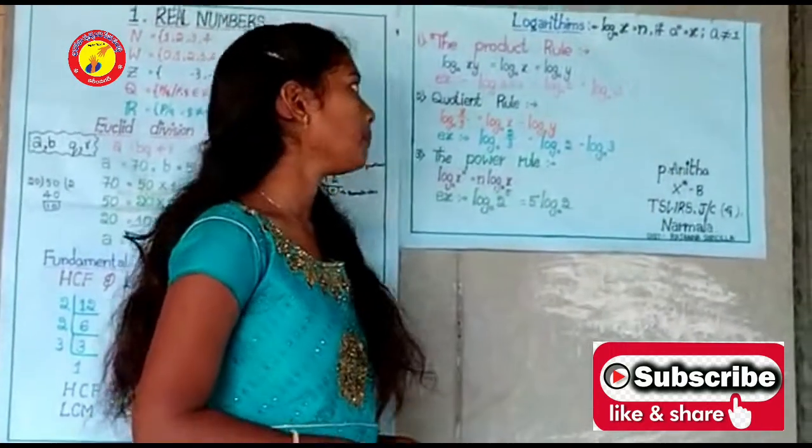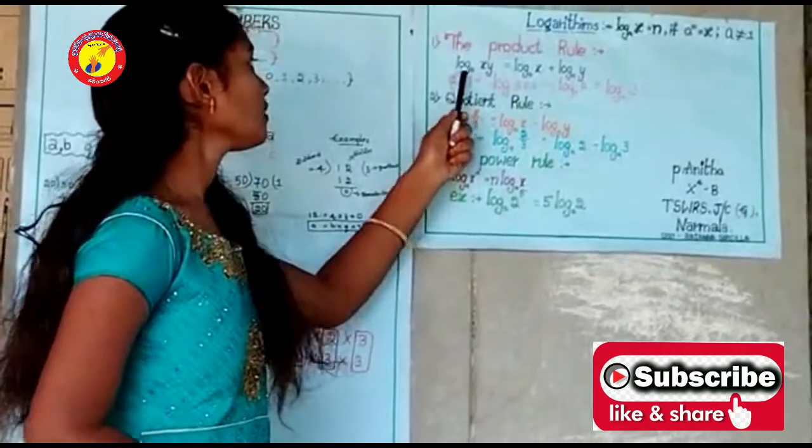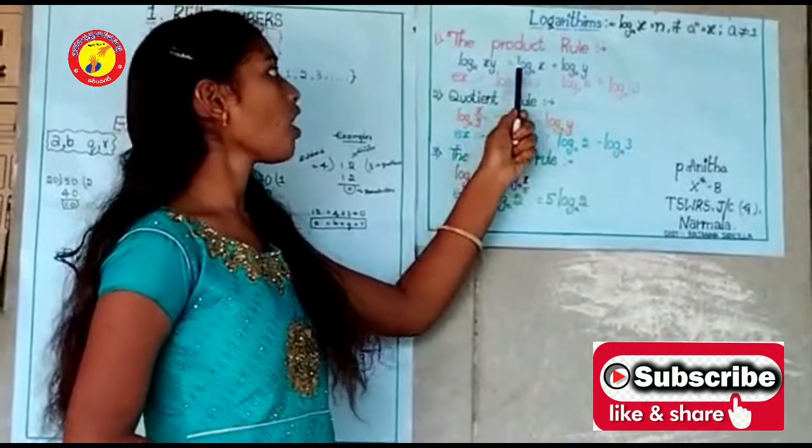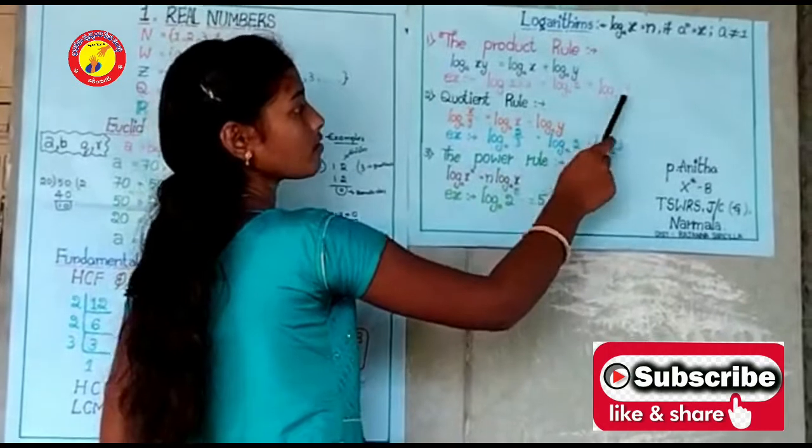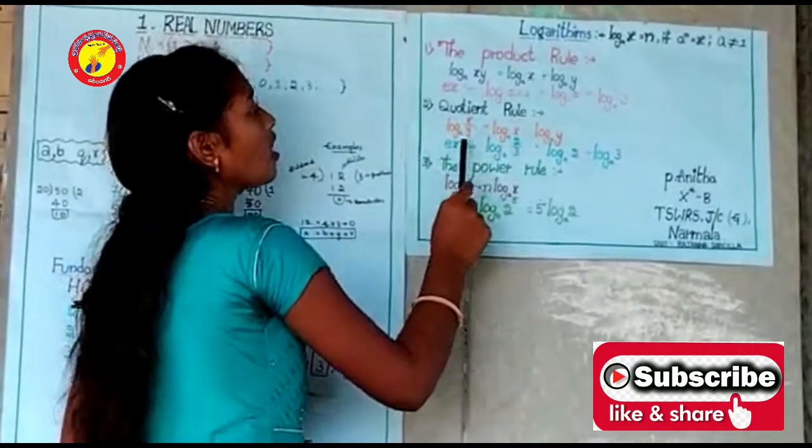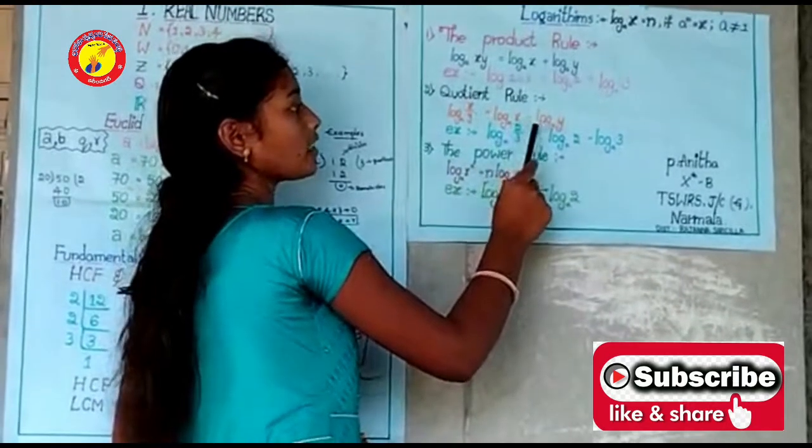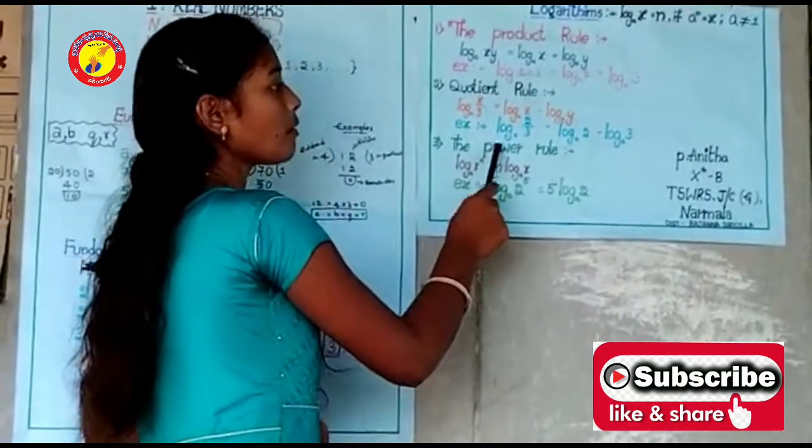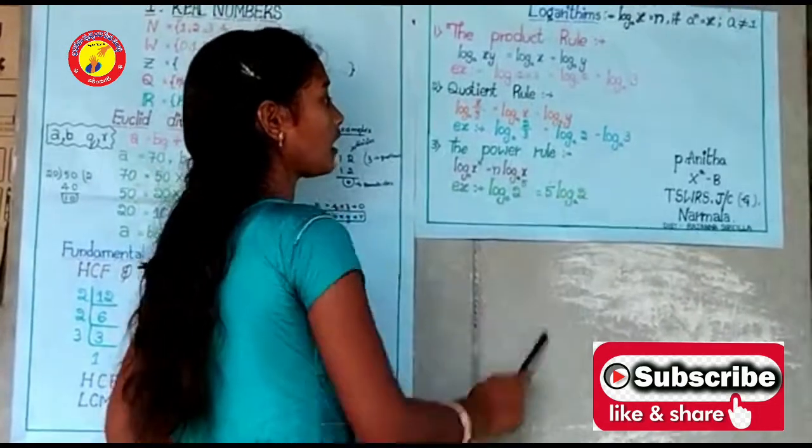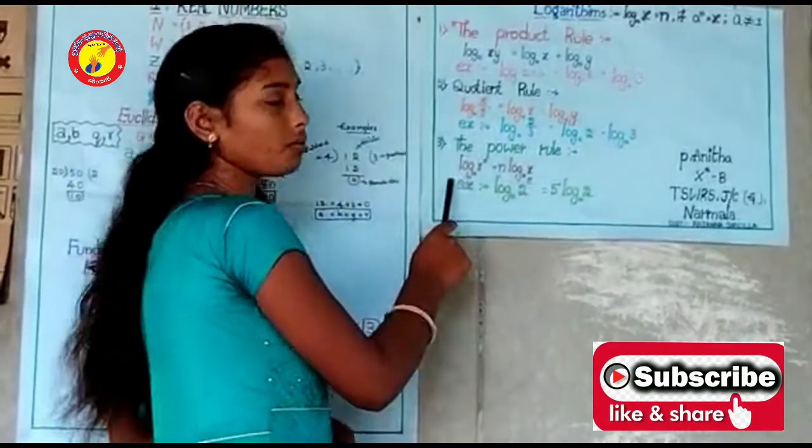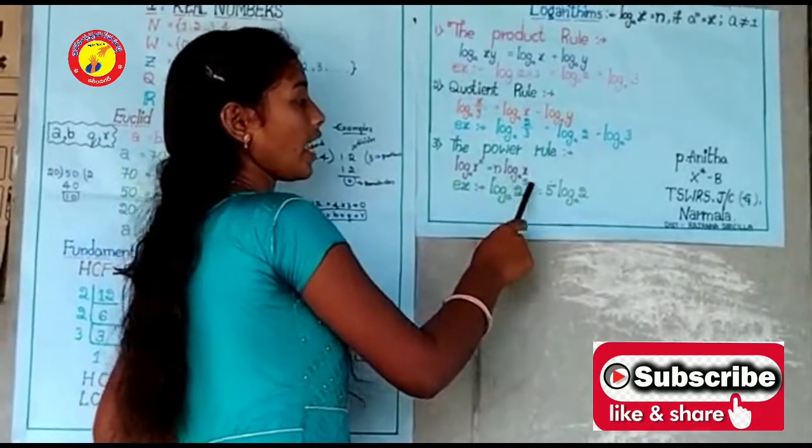Here are the logarithm rules. Product rule: log(xy) = log(x) + log(y). Example: log(2×3) = log(2) + log(3). Quotient rule: log(x/y) = log(x) - log(y). Example: log(2/3) = log(2) - log(3). Power rule: log(x^n) = n×log(x).